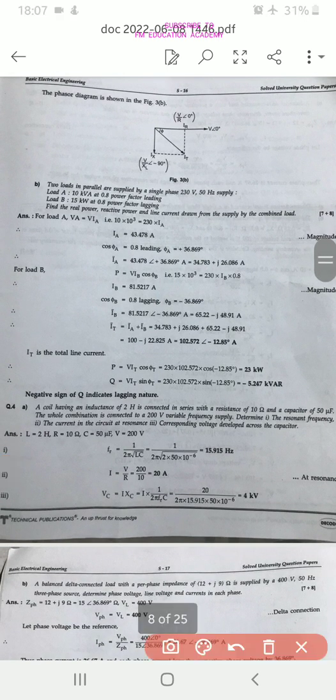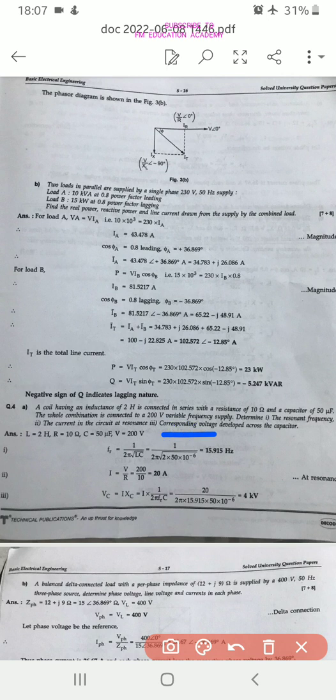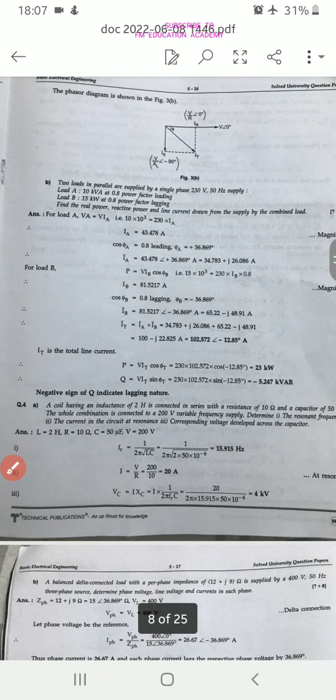50 micro Farad. The whole combination is connected to a 200V variable supplied. Resonant frequency, current in the circuit at resonance and corresponding voltage developed across the capacitor. Answer is given. Resonant frequency formula is FR is equals to 1 by 2 pi root LC.